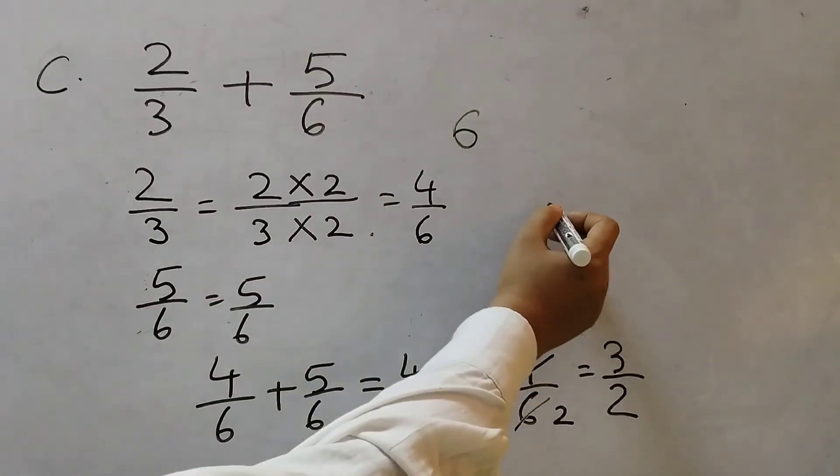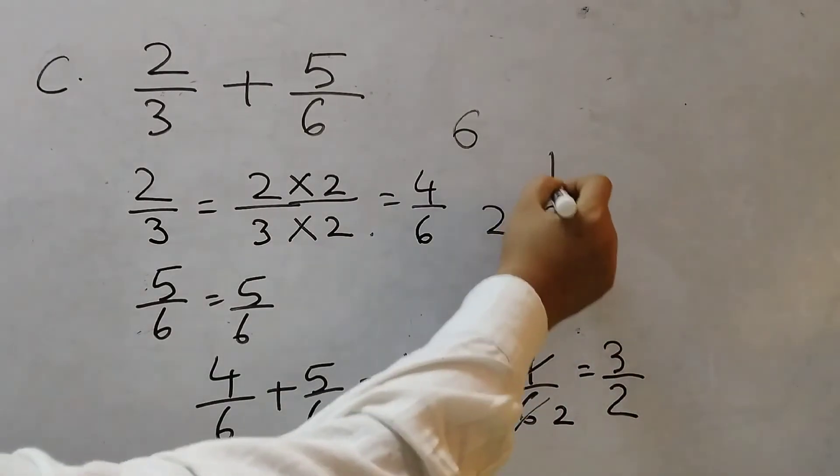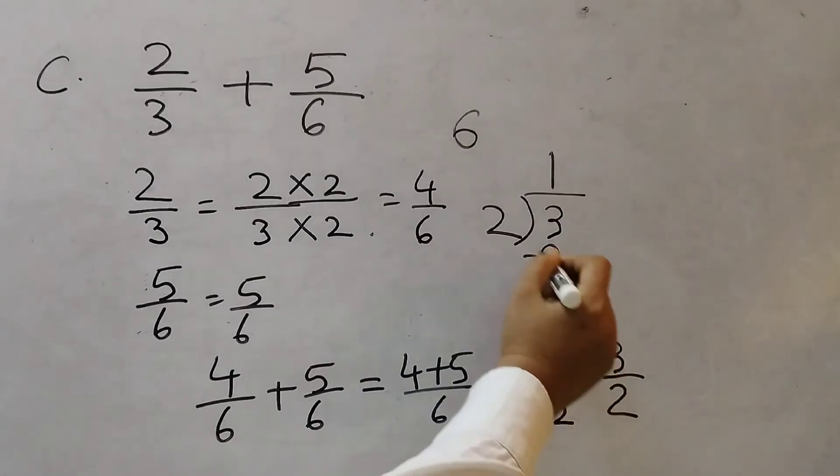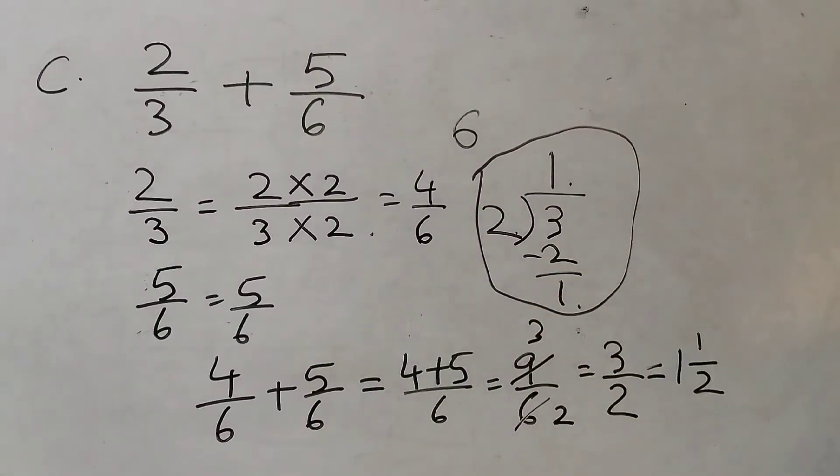Now we can convert this into a mixed number. 3 and then divide by 2. 2 1's are 2. This is your rough work. So now 1, 1 by 2. So your final answer is 1, 1 by 2.